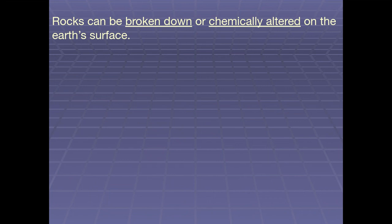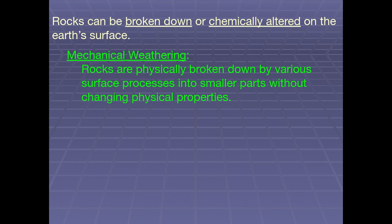Rocks are either broken down into smaller pieces physically, or rocks can be weathered and chemically altered on the earth's surface. Mechanical weathering is where rocks are physically broken down into smaller and smaller pieces from surface processes. The key to mechanical weathering is that the physical properties and chemistry of the rock do not change. You take a huge piece of granite, allow it to disintegrate over time, and it's just a pile of smaller pieces of granite — same minerals, same chemistry.